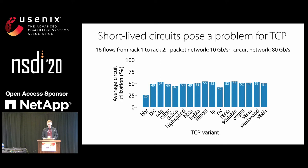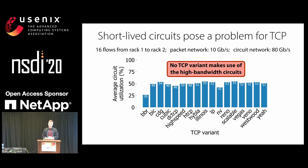This is puzzling because if we had just deployed this expensive and fancy network, we would like TCP to be able to actually take advantage of this bandwidth. But unfortunately, no variant was able to make use of this new bandwidth.